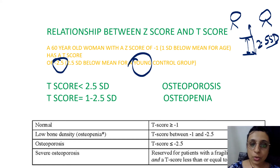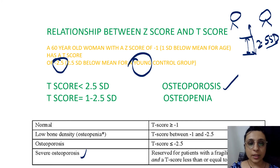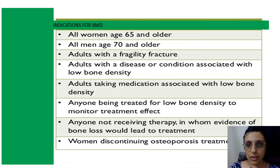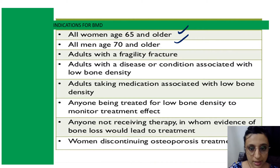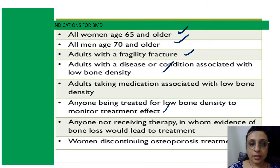A T-score less than minus 2.5 standard deviations is osteoporosis. Severe osteoporosis is when there is an association of fragility fractures. Indications for bone mineral density testing include: all women above 65 years, all men above 70 years, anyone with a prior fragility fracture, adults with diseases causing low bone density, and those on medications associated with bone loss or monitoring treatment effect.